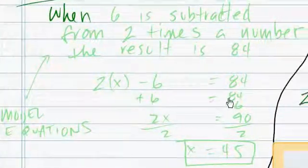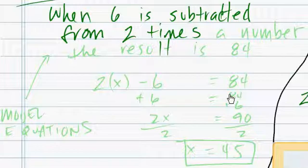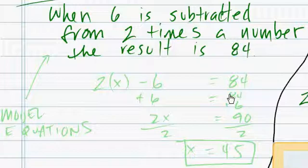This one, when 6 is subtracted from 2 times a number, the result is 84. So we know the result is 84, so we can put equals 84 over here, that's fine. And we know that 2 times the number, so 2 times, we'll say, x minus 6.